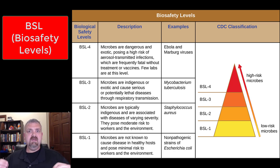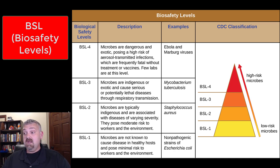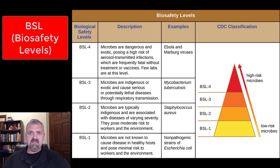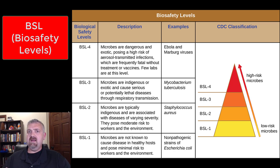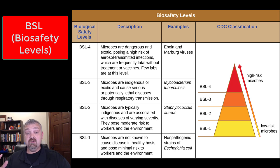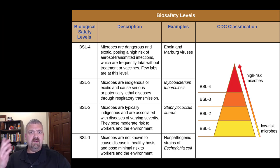BSL 1 is going to be your lowest risk microbes — you really don't need to take any special precautions. For most of these labs we don't even require gloves and eye protection, though those are always a smart idea. BSL 2 would be the highest level we ever work with in our lab. BSL 3 and BSL 4 is where you have to take super special precautions. Let's go ahead and walk through each of these.